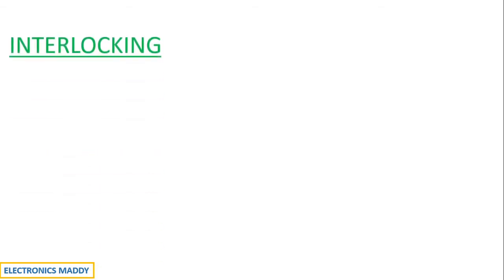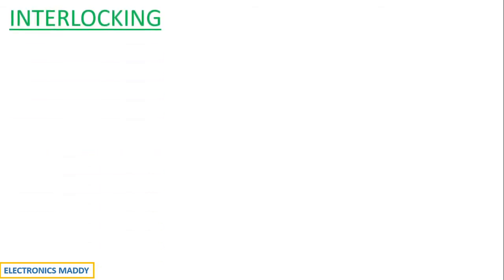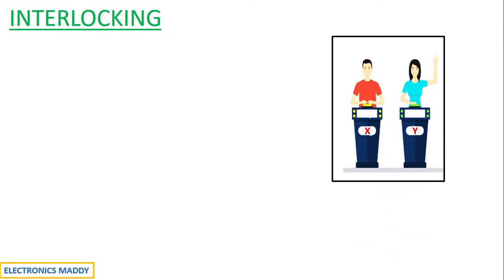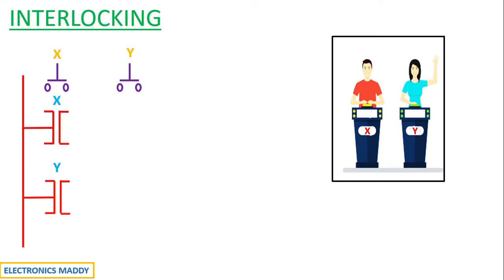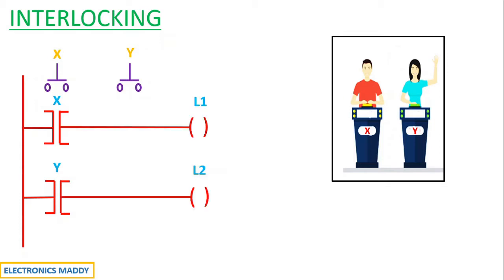Hello everyone, in this video I am going to explain the concept of interlocking in PLC. In order to understand interlocking in the simplest possible way, let us consider a typical example where we have two participants X and Y participating in a quiz program. Each of them have a push-button switch, represented as a normally open contact, connected to a light load.